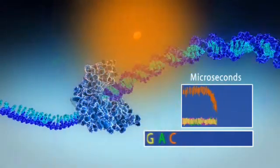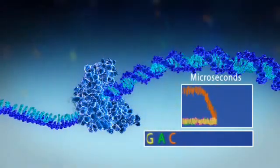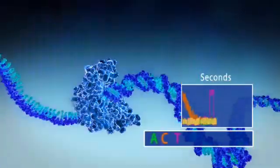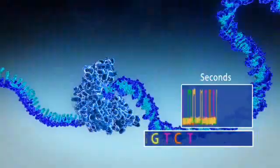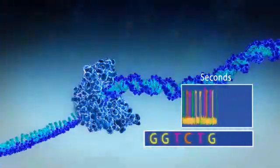After incorporation, the label is clipped off and diffuses away. The whole process repeats, creating sequential bursts of light corresponding to the different nucleotides. These are recorded, thus building the DNA sequence.